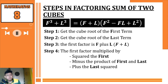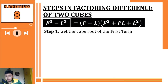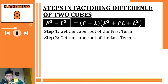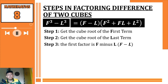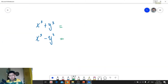The second factor is: the first term squared, minus the product of the first and the last, plus the last term squared. Here are the steps in factoring difference of two cubes. First, get the cube root of the first term. Second, get the cube root of the last term. Third, the first factor is F minus L. Fourth, the second factor is: the first squared, plus the product of the first and the last, plus the last term squared.